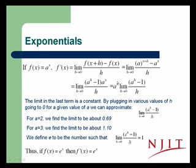We pull out the a to the x, since there's no h's in that piece, and we end up that with the derivative of a to the x being a to the x times some constant, that constant being the limit as h goes to zero of a to the h minus 1 over h.